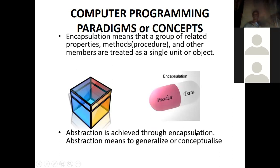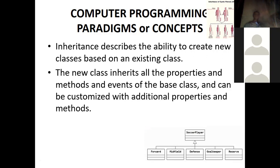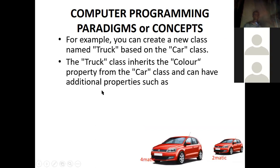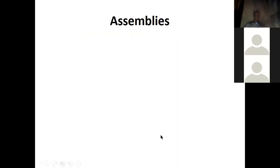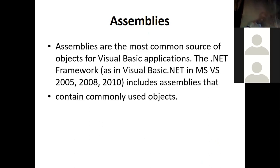Abstraction is achieved through encapsulation — they are related. Inheritance means we create a new class that inherits all the properties of the original class. Polymorphism is the concept that different objects have different implementations of the same characteristic. For example, two cars — one automatic, the other manual — but they both drive. The drive method is implemented differently. That is called polymorphism.